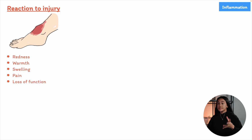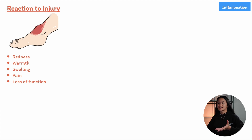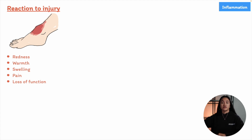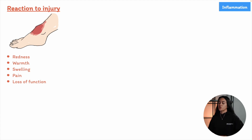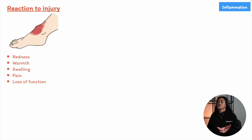There are some classic signs of acute inflammation including redness, warmth in the area, swelling, pain, and temporary loss of function. These symptoms play important roles in healing. For instance, redness and warmth occur because more blood flows to the injured area. Swelling and pain, along with the temporary loss of function, encourage you to rest the affected area — like avoiding walking on a sprained ankle so it can heal properly.